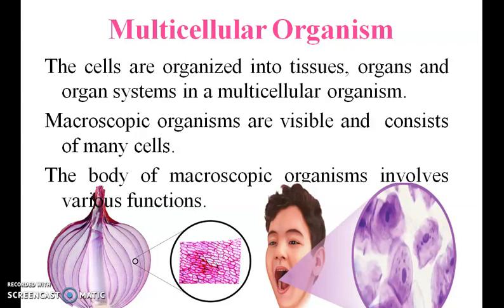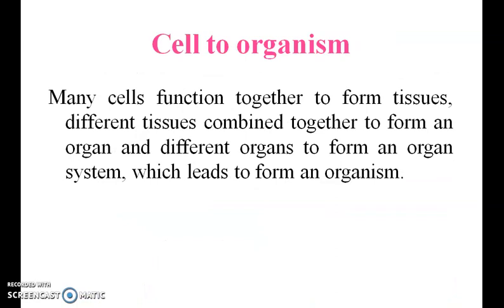Multicellular organisms: the cells are organized into tissues, organs, and organ systems. Macroscopic organisms are visible and consist of many cells. The body of macroscopic organisms involves cells with various functions. Many cells function together to form a tissue; different tissues come together to form an organ, and different organs form an organ system, which leads to a formal organism.